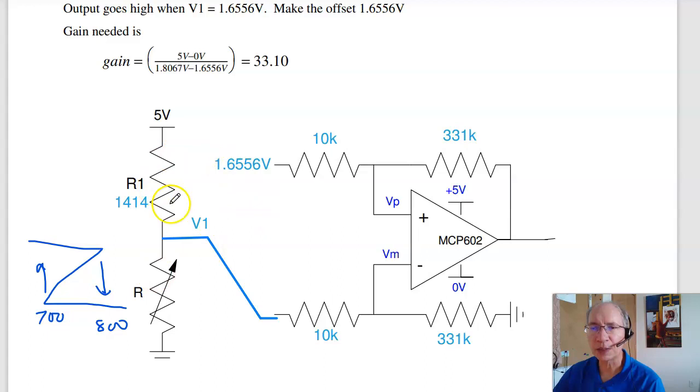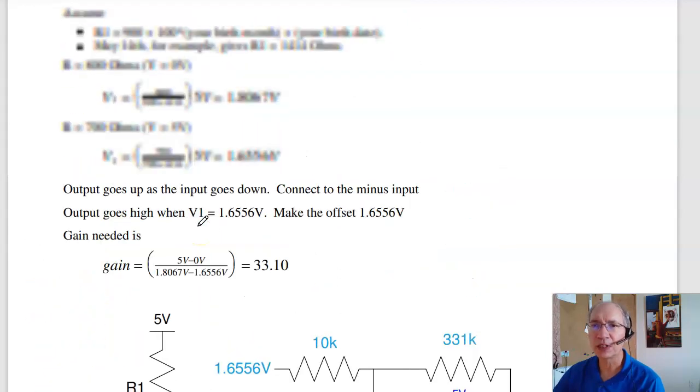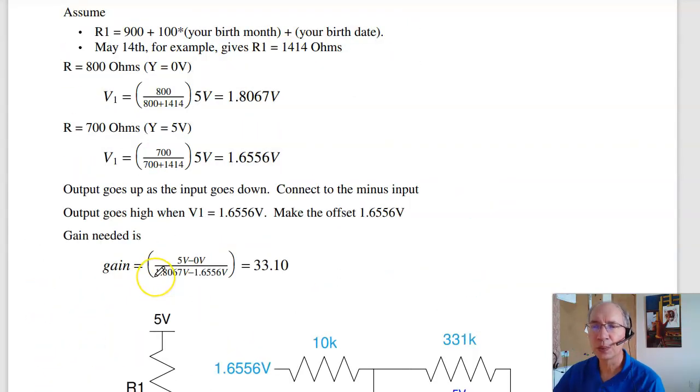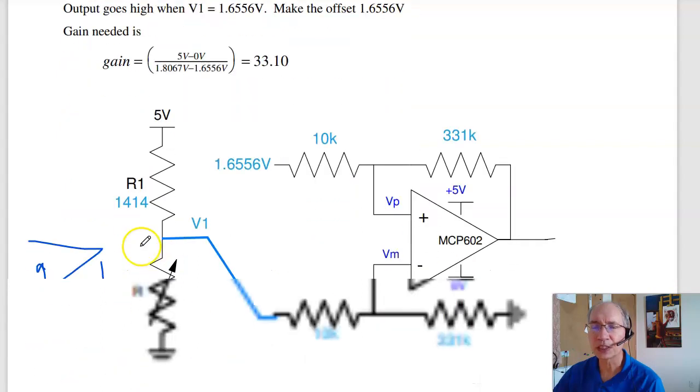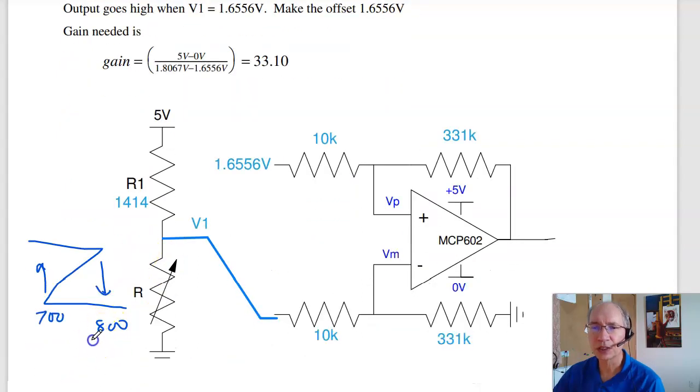Well, the first step is you have to choose R1. That's based upon your birth date. If you choose, assume 1414 ohms, then V1 is going to vary from 1.86 to 1.65 volts. So this is 1.86 volts and 1.65 volts.